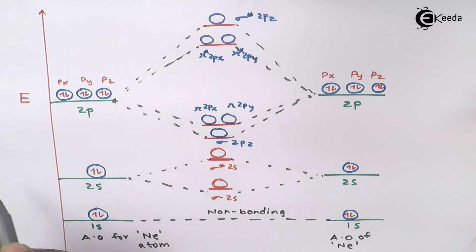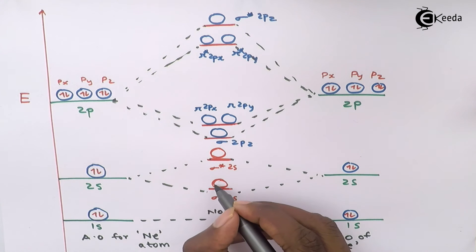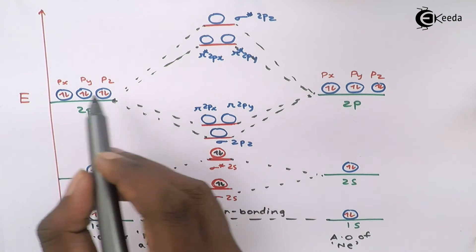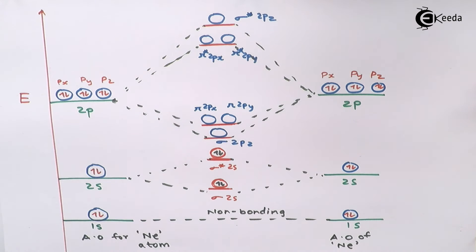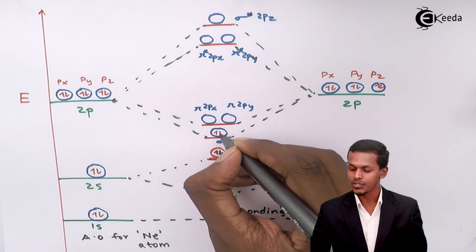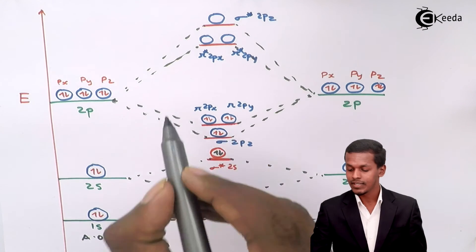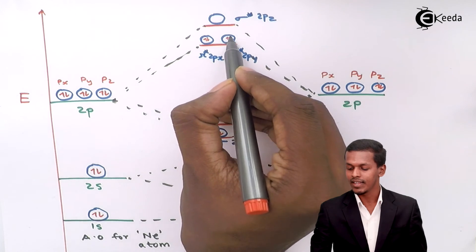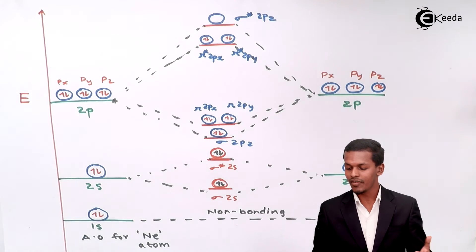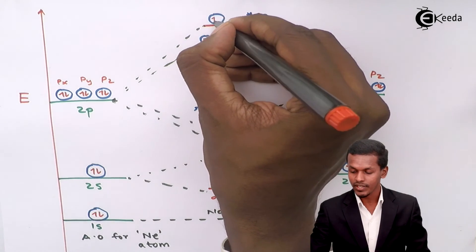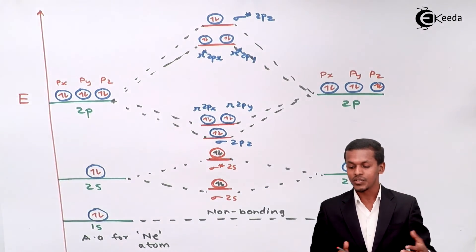Now we fill in the electrons according to the Aufbau principle and Hund's rule. The sigma 2s and sigma star 2s energy levels together consist of 4 electrons, so I fill those with 4 electrons. For the 2p molecular orbitals, there are 10 electrons in total across the two neon atoms, and I fill all of them into the molecular orbitals accordingly.